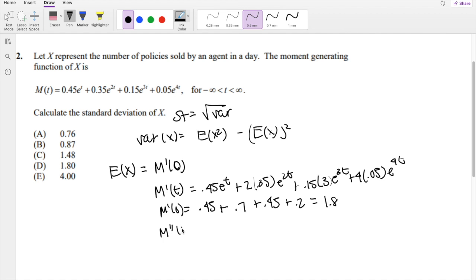This is equal to—first term stays the same. The second term becomes 2 times 2 squared times 0.35e^(2t) plus 0.15 times 3 squared e^(3t) plus 4 squared times 0.05e^(4t). We evaluate it at 0.